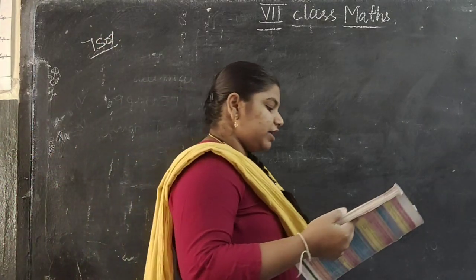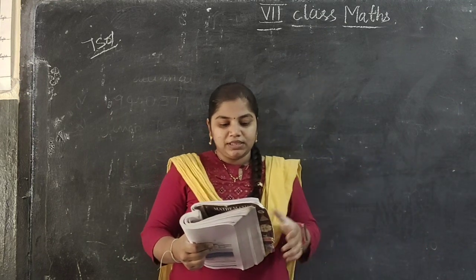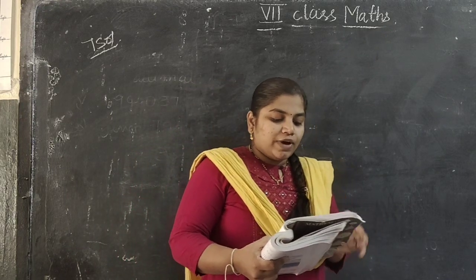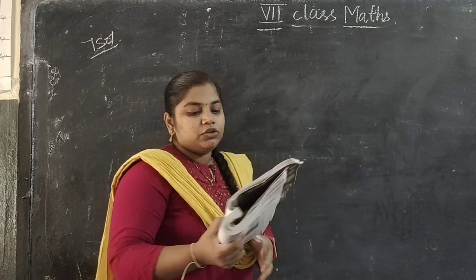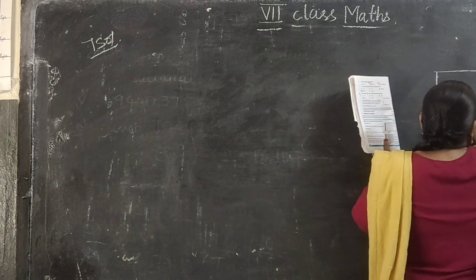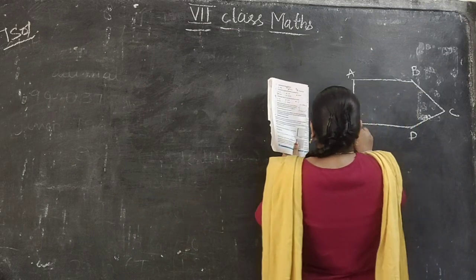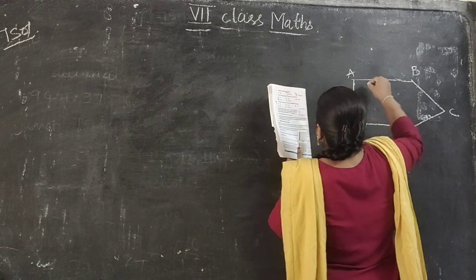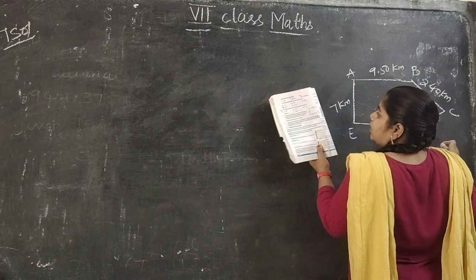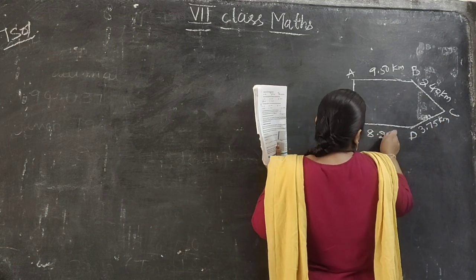Aruna and Radha start their journey from 2 different places, A and E. Aruna chooses the path from A to B then to C, while Radha chooses the path from E to D then to C. Find who traveled more and by how much. The distances given are: AB is 9.50 km, BC is 2.40 km, ED is 8.25 km, and DC is 3.75 km.